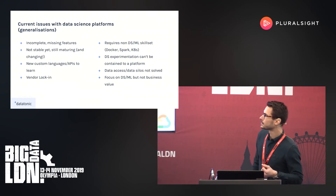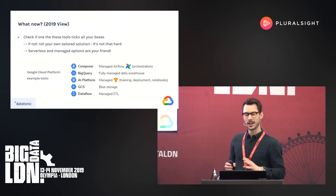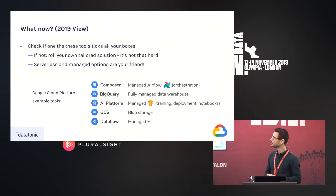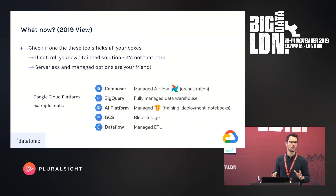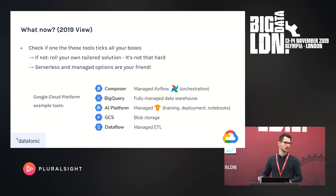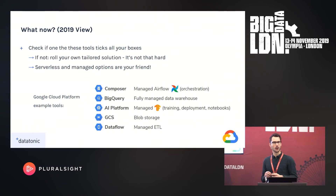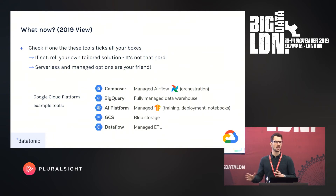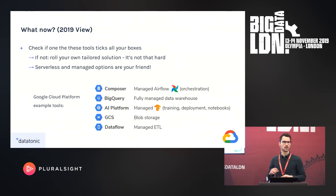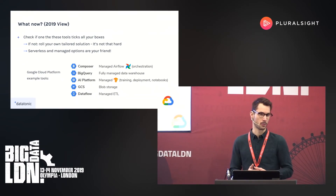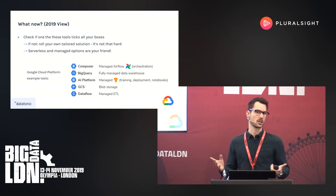So where does that get us? Our Datatonic view is that there are amazing tools coming out and improving by the day. Our recommendation: check if one of these solutions ticks all your boxes. If it does, go and roll with it. If not, don't despair — there are a lot of other tools and products that will allow you to build tailored, custom machine learning pipelines that can be easily productionized. The remainder of this talk will walk you through an example with specific tools that quite simply build a productionized demo pipeline with reusable components.